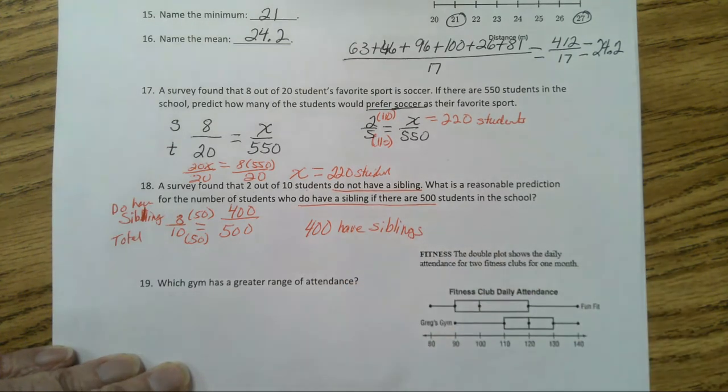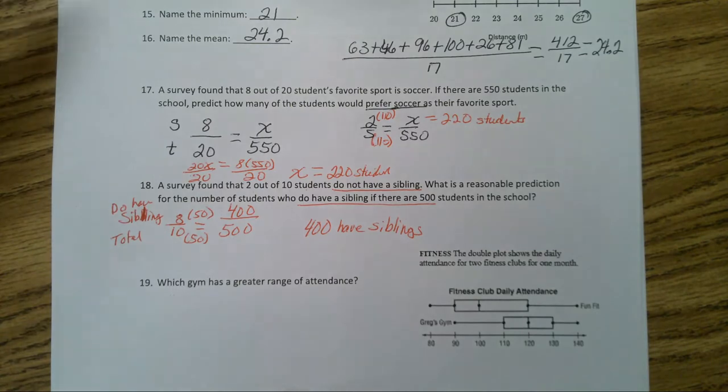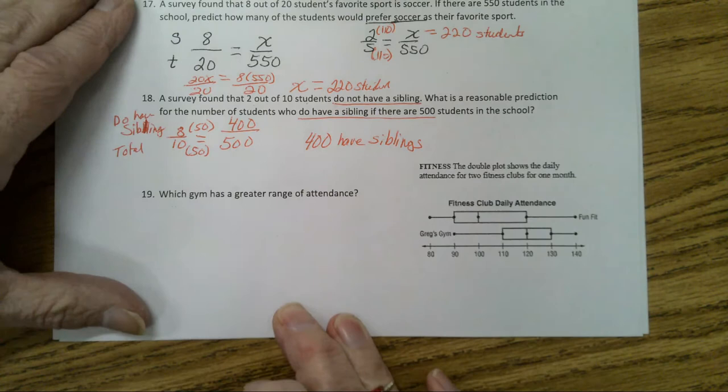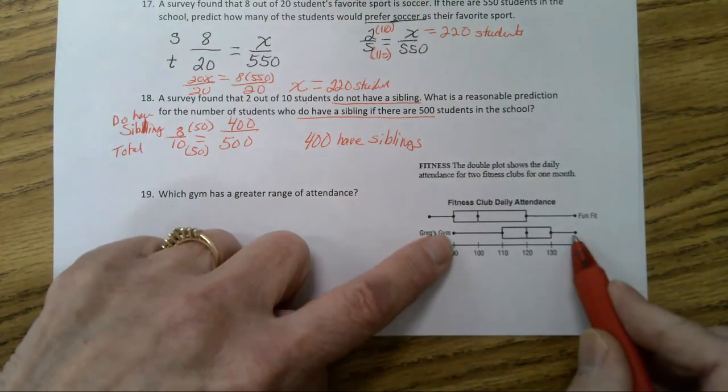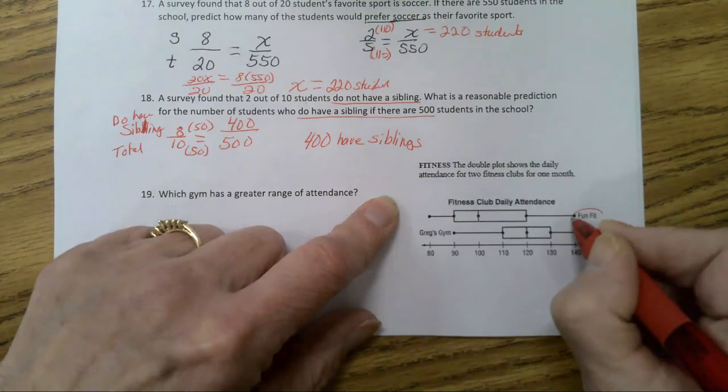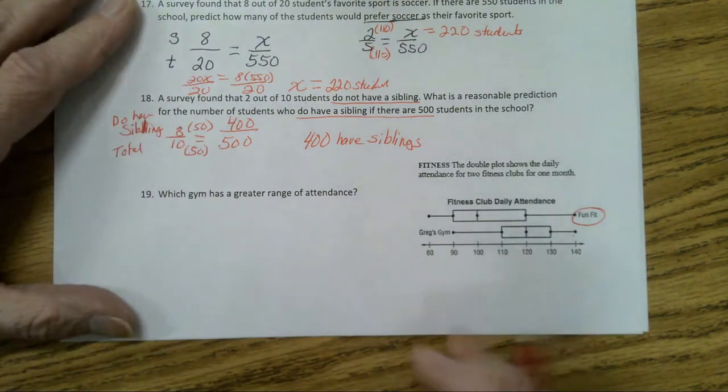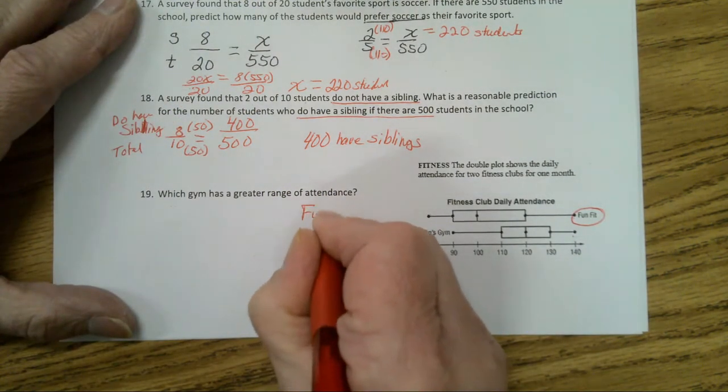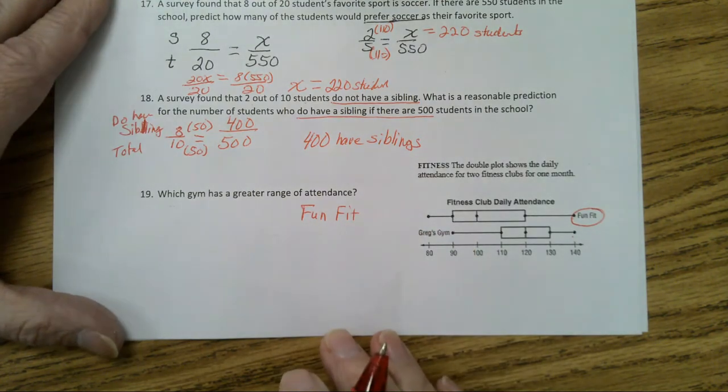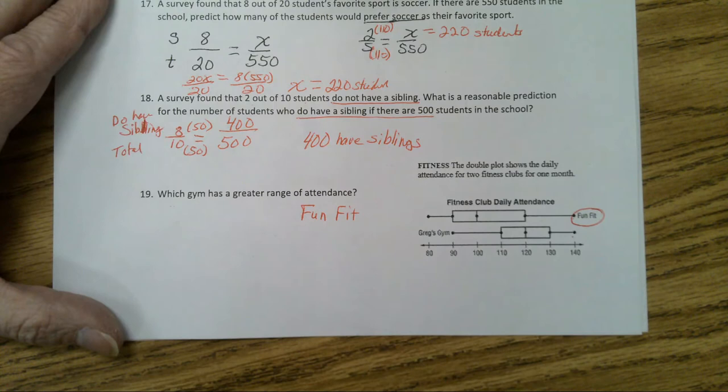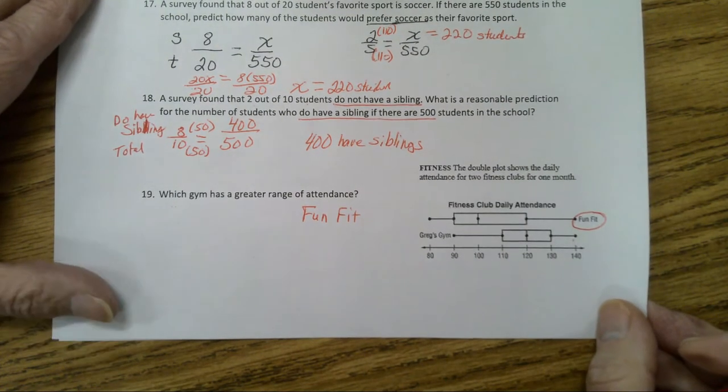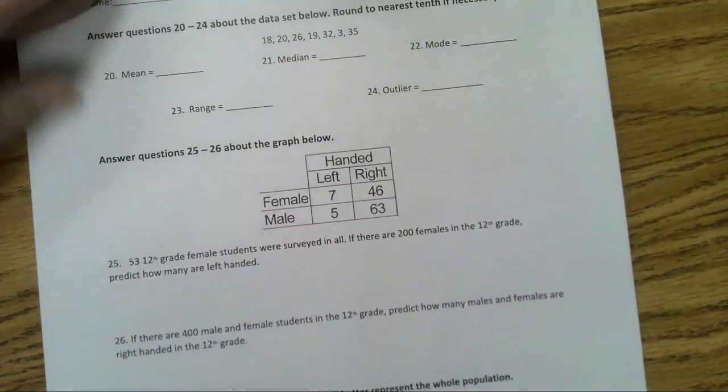Now, we're going to compare box plots. Let's go on to number 19. Which gym has a greater range? Well, it's the top one, and the name of that gym is Fun Fit. If you have any questions over these, please make sure you ask questions before we do the test tomorrow. I'll be happy to go over any of these problems. Now we have one more page to do. Let's go to the back.